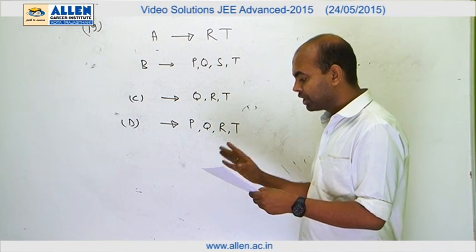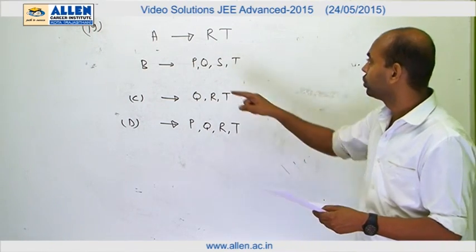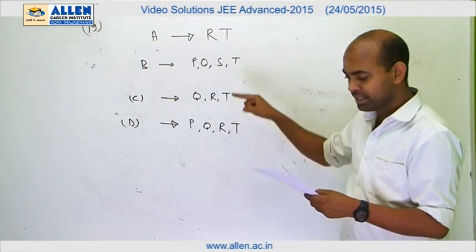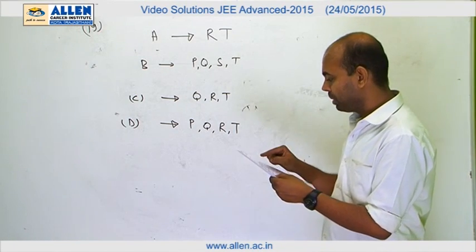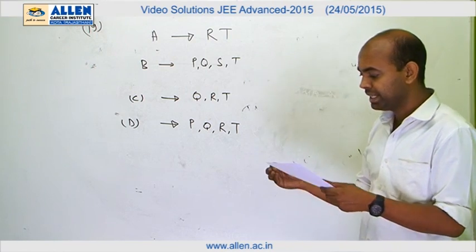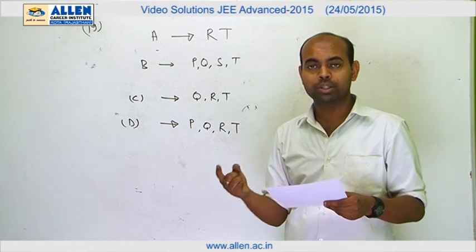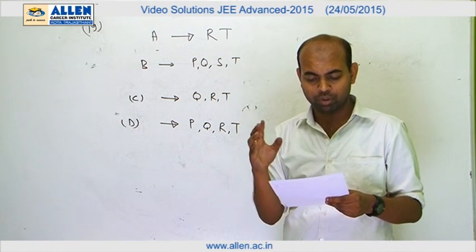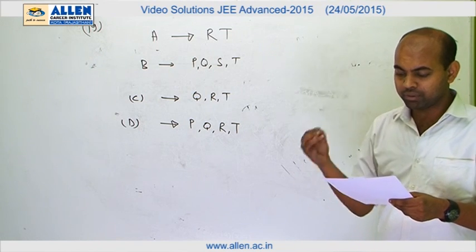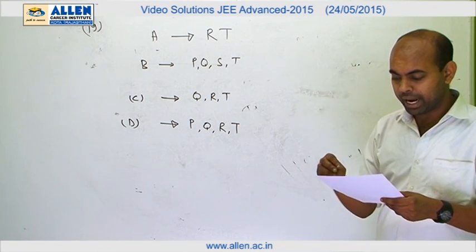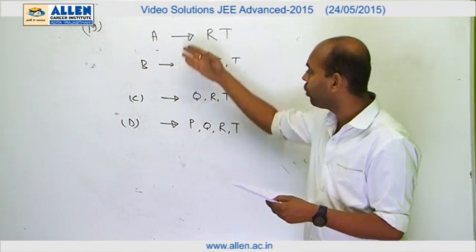For the first part, nuclear fusion is involved with energy production in stars — nuclear fusion occurs along with neutrino emission, so the answer for A is RNT. For nuclear fission in a nuclear reactor, part B, the answer is PQST: P is absorption of thermal neutrons, Q is cobalt nucleus undergoing fission, S is heavy water being used, and T is neutrino emission.